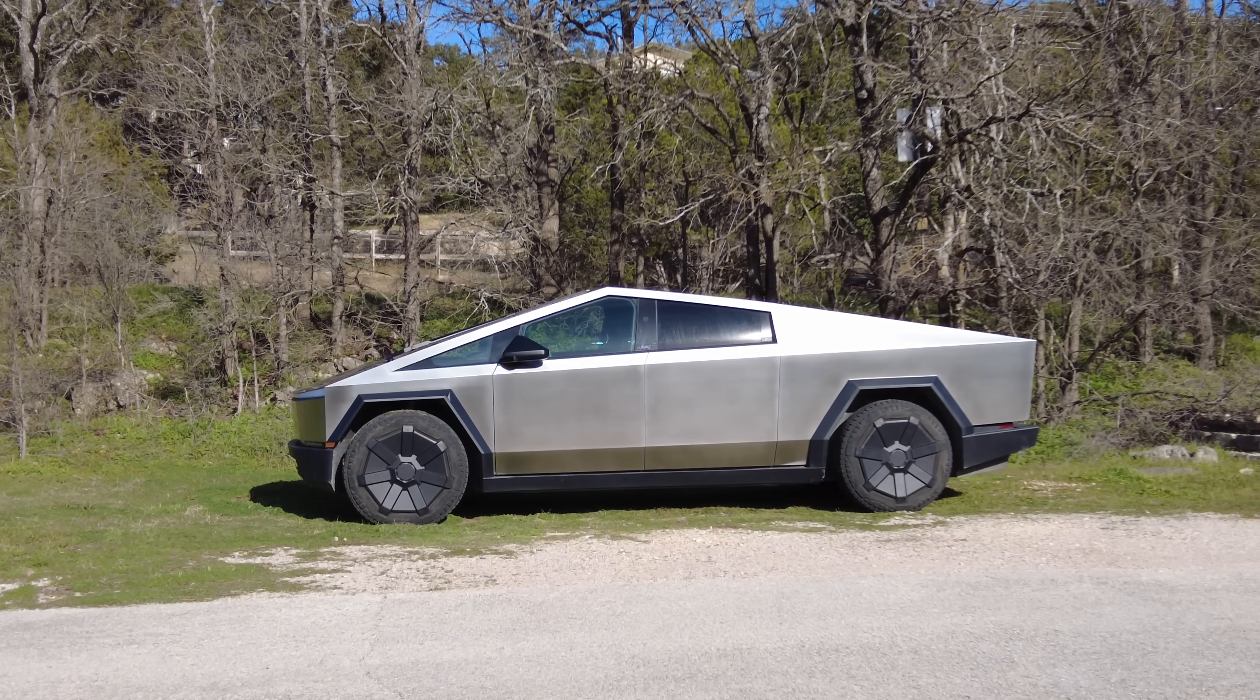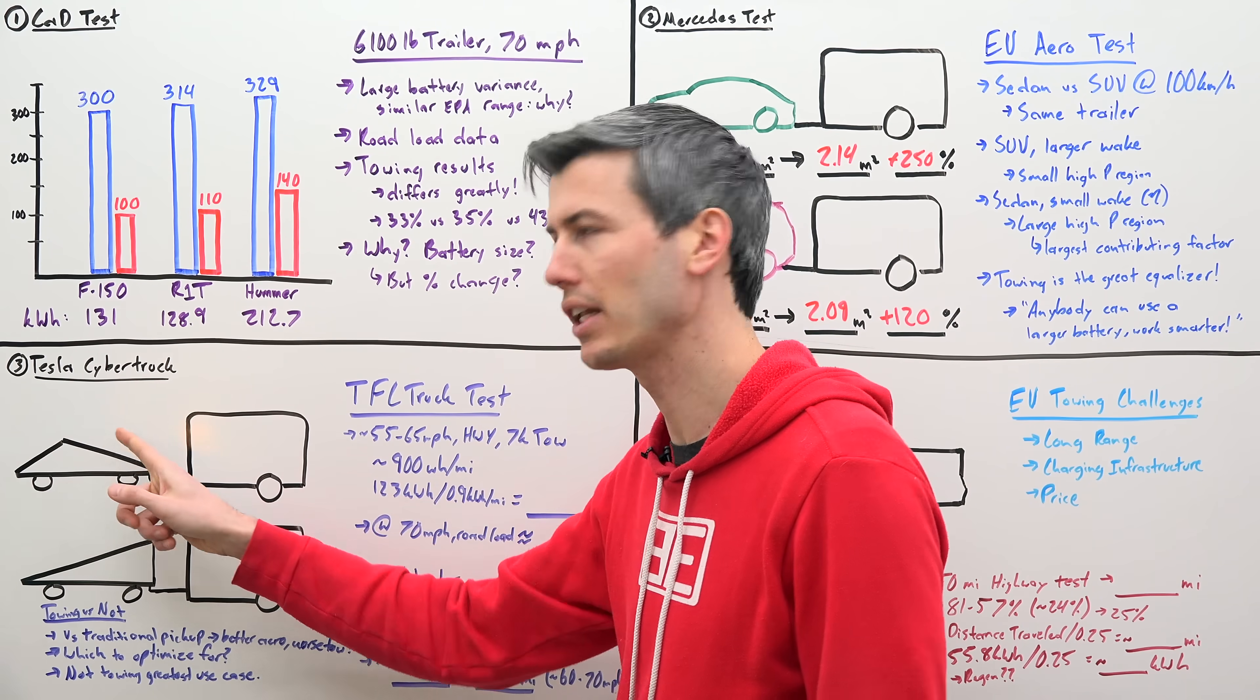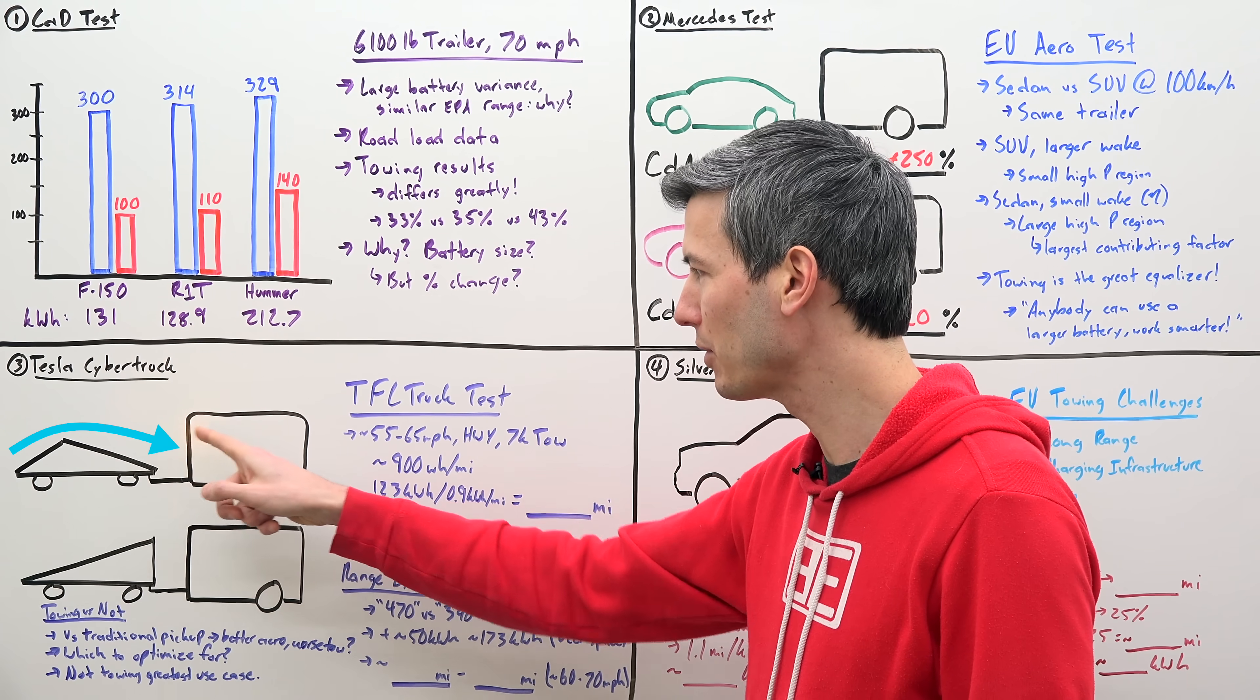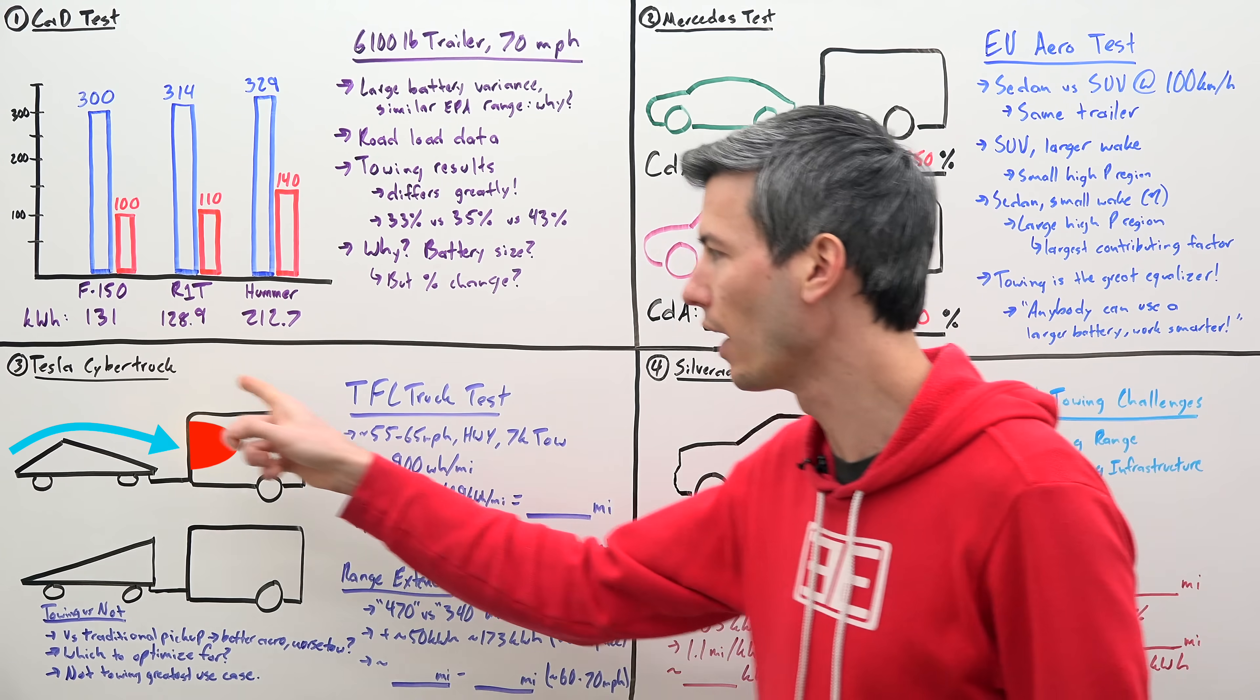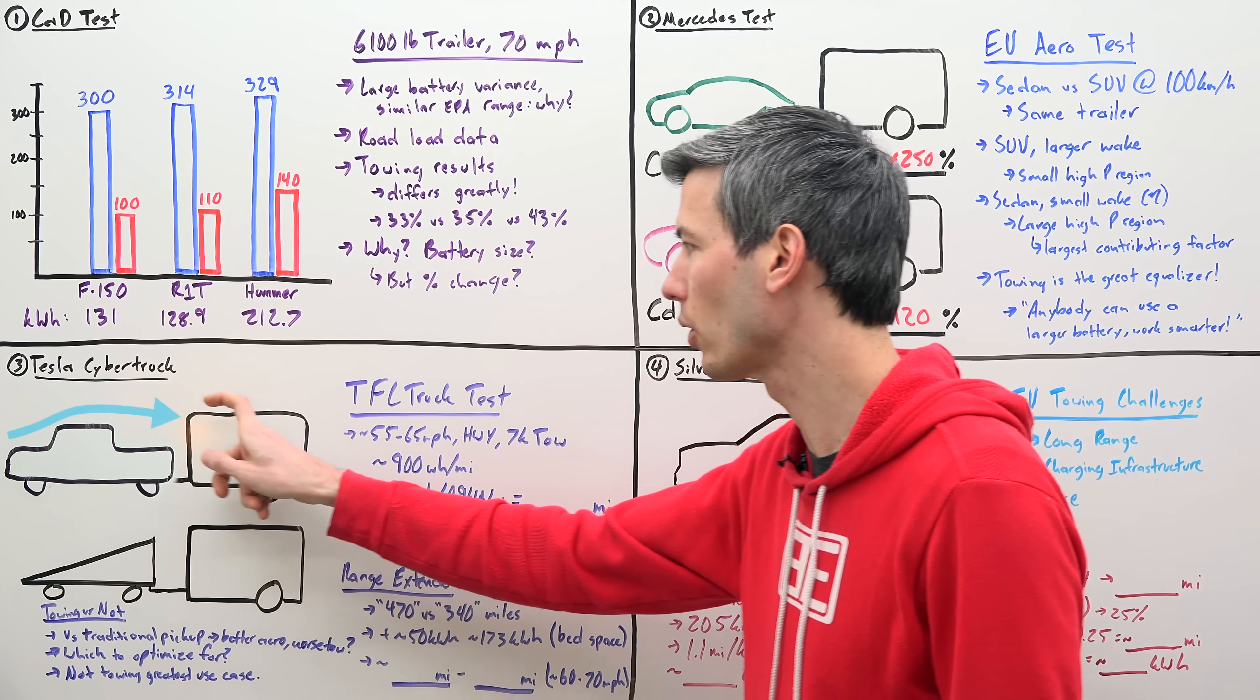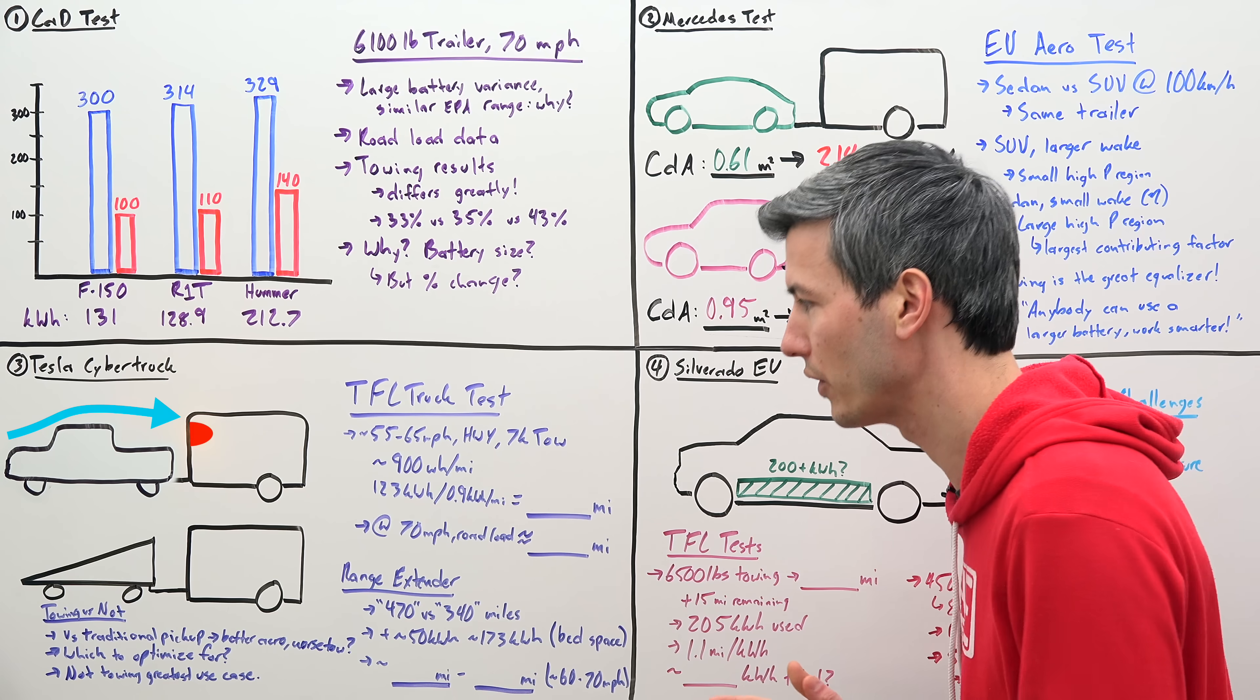All right, so how does this relate to the Tesla Cybertruck? For a pickup truck, the Cybertruck is actually pretty aerodynamic. But what this could mean is that you have that airflow come back and then ram into the front of that trailer and thus create that large high pressure region, reducing the aerodynamic efficiency of the overall unit. So if you were to use a more traditional pickup style, you may have a larger wake, thus meaning while towing, you get better aerodynamics.